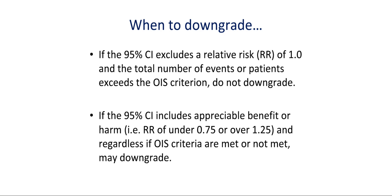So when would one downgrade? If the 95% confidence intervals exclude a relative risk of 1 and the total number of events or patients exceeds the optimal information size criterion, then one would not downgrade. If the 95% confidence intervals include appreciable benefit or harm — for instance, a relative risk under 0.75 or over 1.25 — and optimal information size criteria are met or not met, one may downgrade.